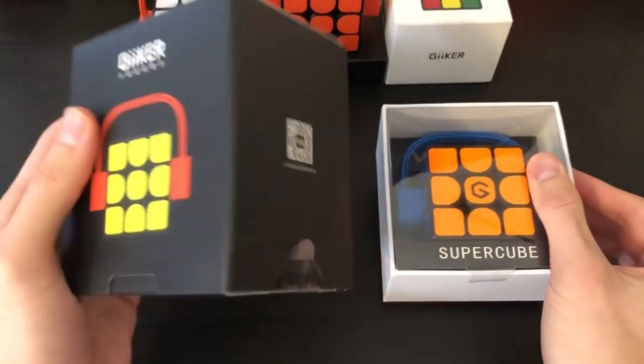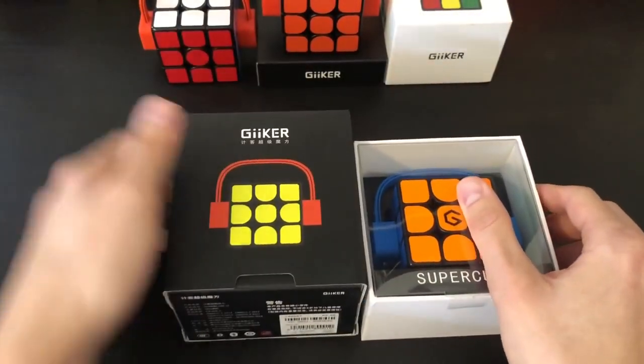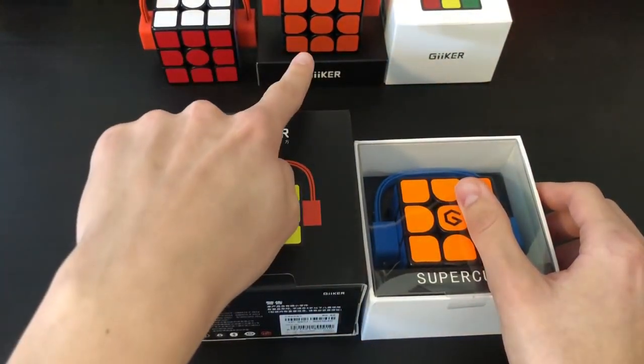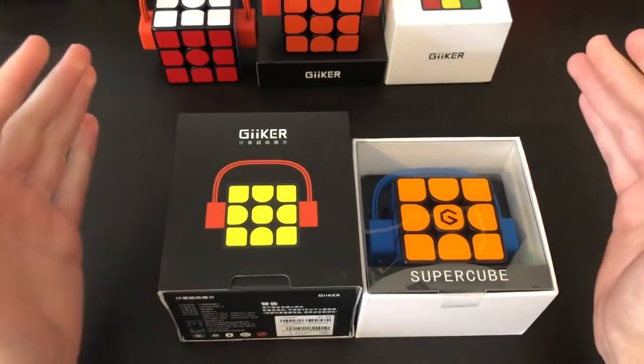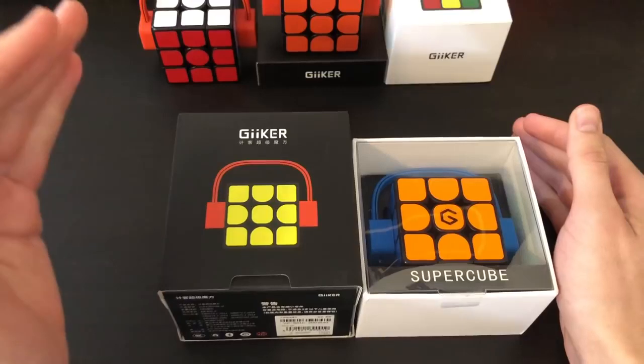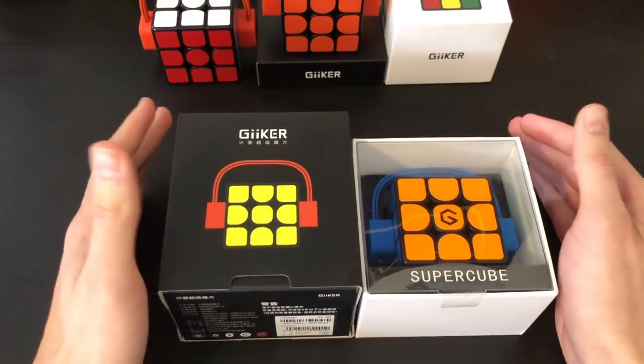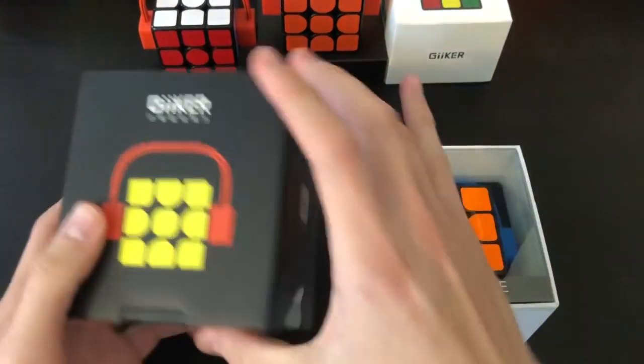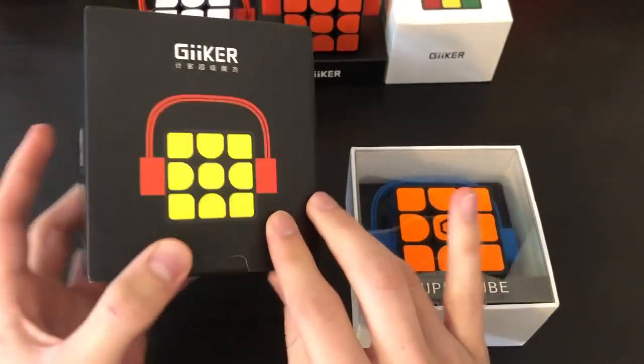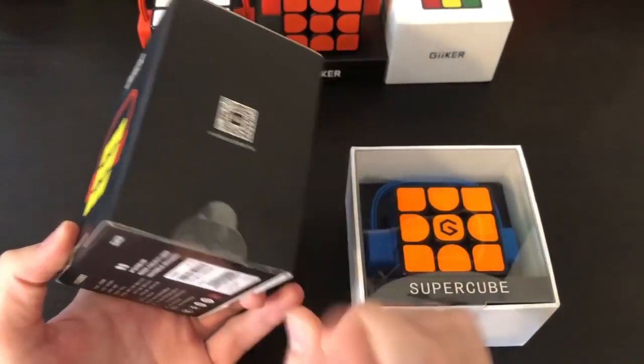Alright, so I was not expecting a regular Gicker Cube. I already have two. I have the one I stickered myself and I have the one I took the magnets out of. And then this third cube over here is the Gicker M3, which is the normal Gicker 3x3 that is competition legal. It doesn't have sensors in it and it turns exactly how these two feel. However, I was not expecting this regular Gicker Cube in this package, so I will be giving this away to one of you guys.